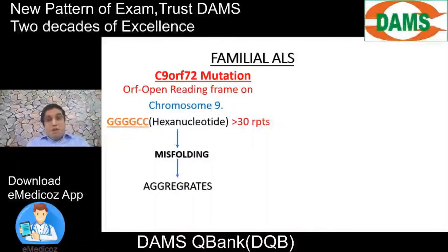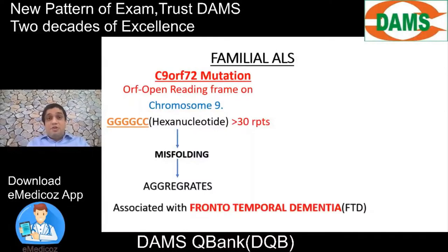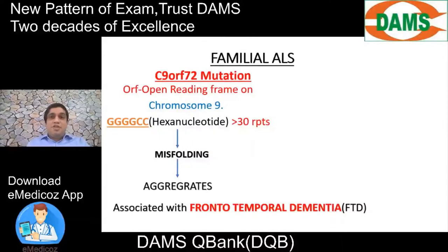This same C9ORF72 open reading frame mutation is also responsible for frontotemporal dementia, another neurodegenerative disorder involving the cortex. An ALS patient could also suffer with FTD because of this common gene mutation causing both disorders.